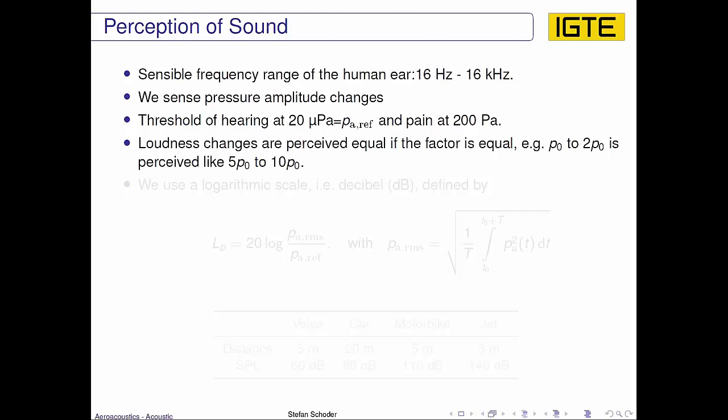So the difference between P0 and 2P0 would be equal to the factor we are experiencing as a change from 5P0 to 10P0, which would be an increase of 5P0. This means we experience it in the same way.